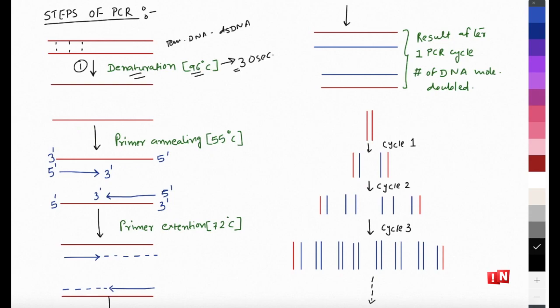Once both strands are separated, we want the primer to bind. Primer annealing - the binding of primer to the separated strands - happens once we bring down the temperature to 55 degrees centigrade. Because the primers are shorter sequences compared to the full region, before the two single strands can re-bind to each other, the shorter primer sequences bind first. So in the annealing step at 55°C, primers bind to your separated strands.